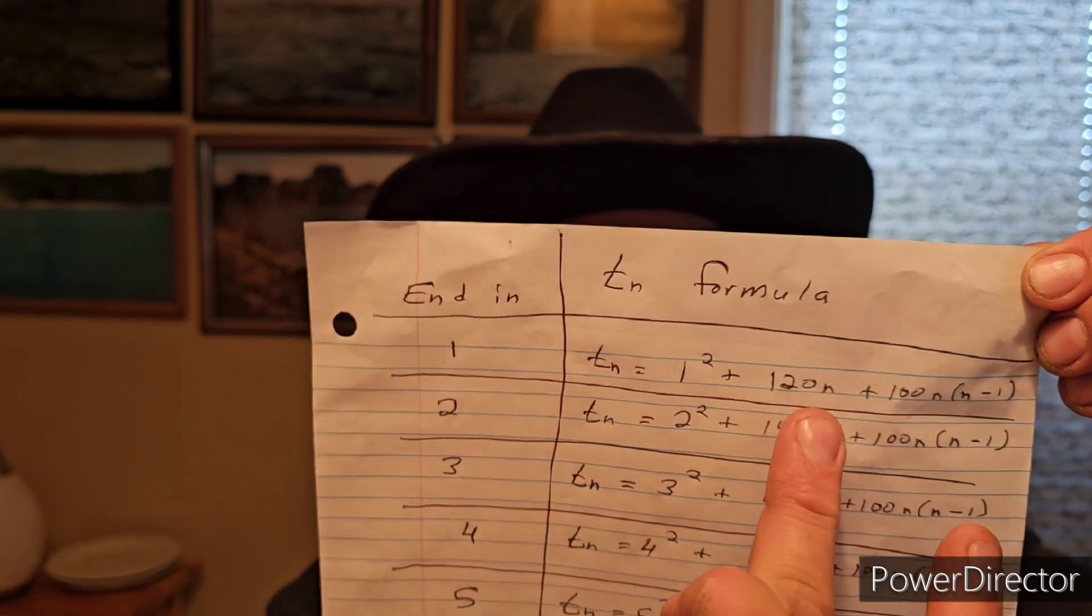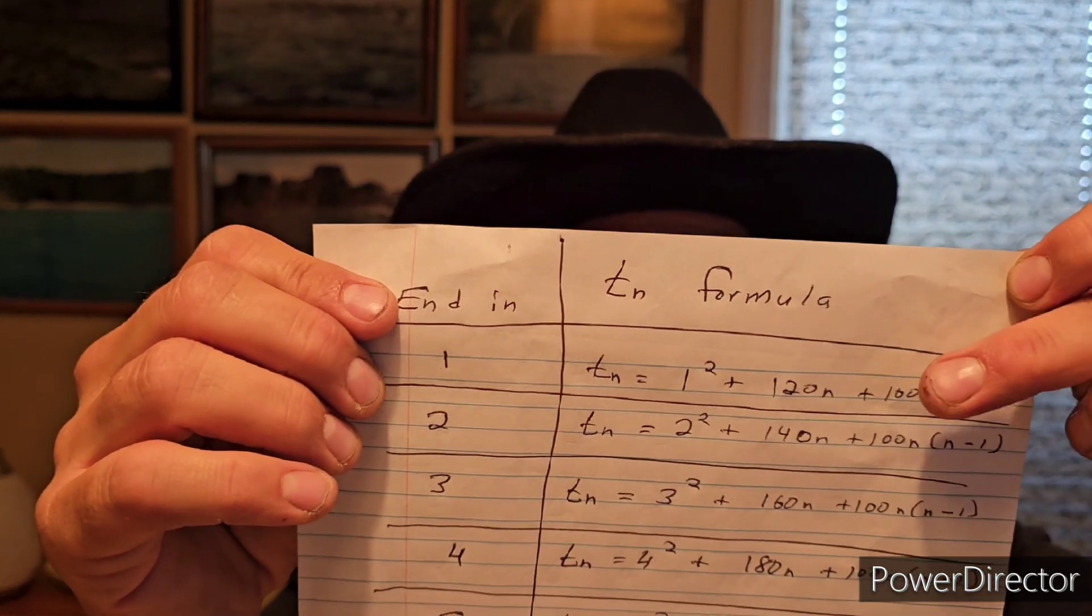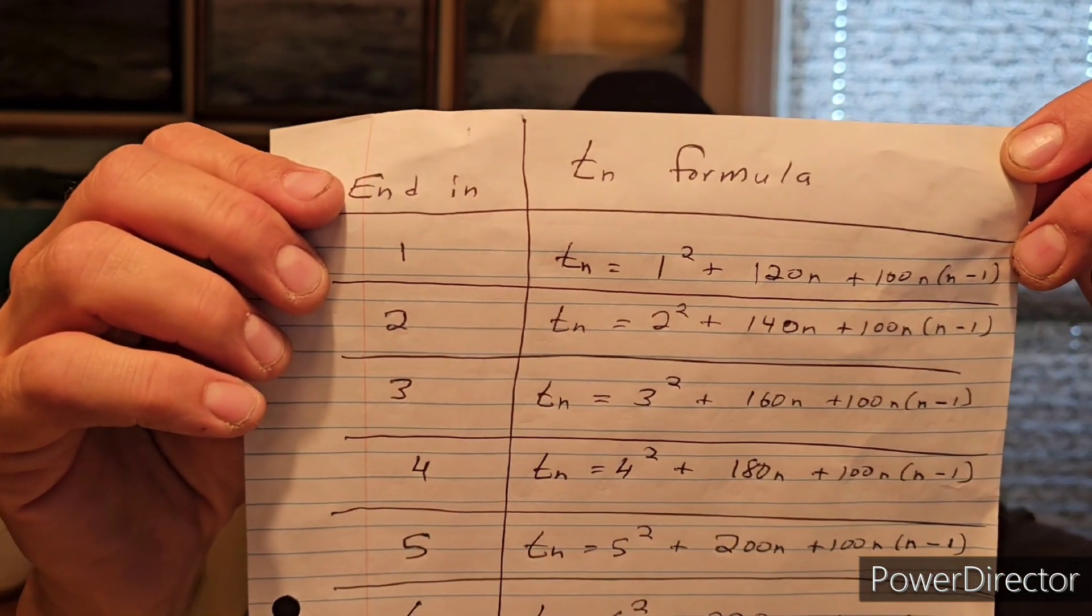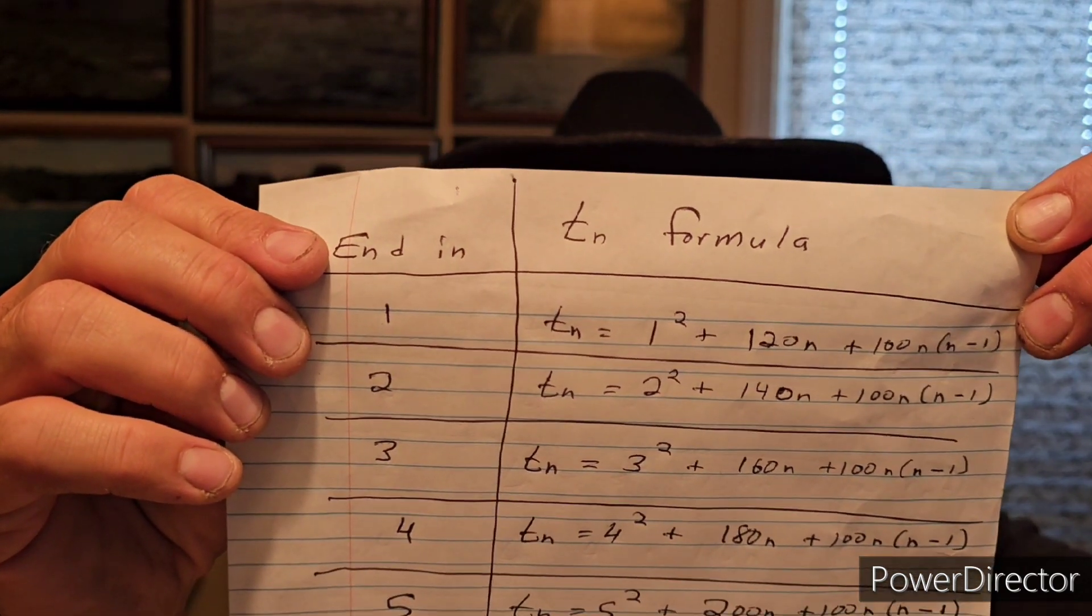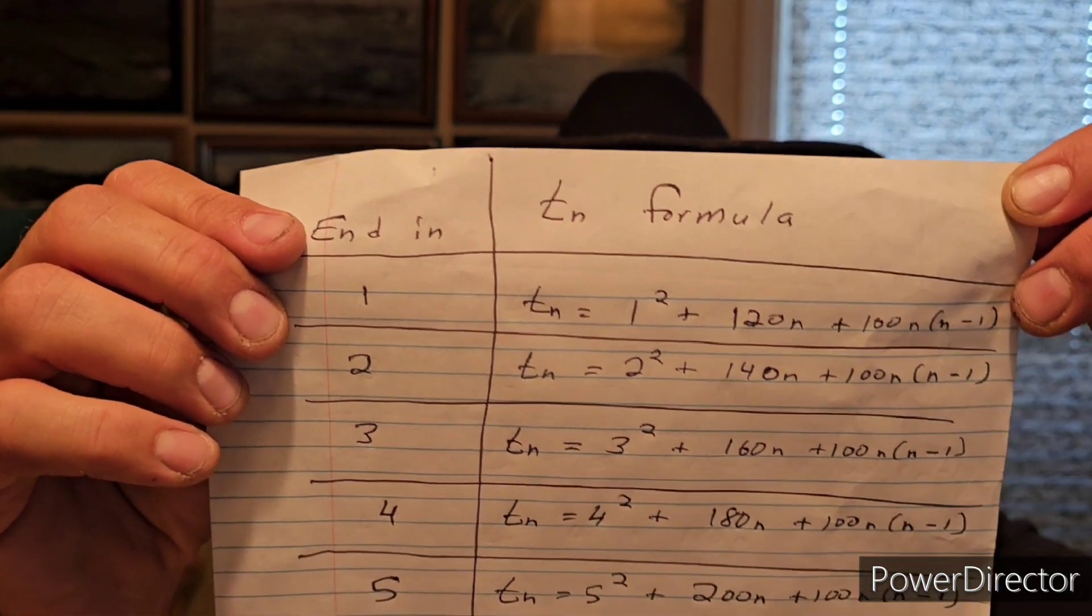So it would be 1 squared plus 7 times 120. That's 840 plus 100 times 7 times 6. That would be 4200 plus 840. That would be 5040 plus 1. And that is 5041, which is 71 squared.